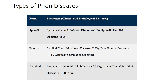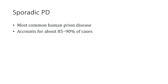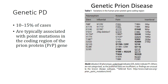Sporadic prion diseases account for 85 to 90% of human prion disease cases. Genetic prion diseases account for 10 to 15% of all cases and are typically associated with point mutations in the coding regions of the PRNP gene on chromosome 20. The genetic prion diseases are caused by several mutations, and those indicated in bold are usually associated with a CJD-associated phenotype.